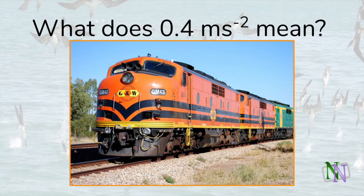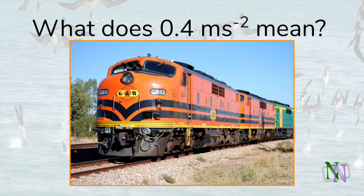What does it mean to say that this train has a forward acceleration of 0.4 meters per second squared? Its speed changes by 0.4 meters per second every second. If it starts at a standstill, one second later it will be going at 0.4 meters per second, after another second at 0.8 meters per second, and after 10 seconds at 4 meters per second.